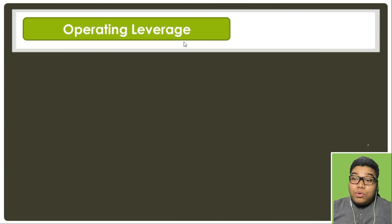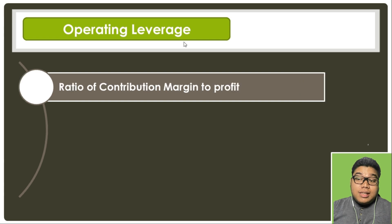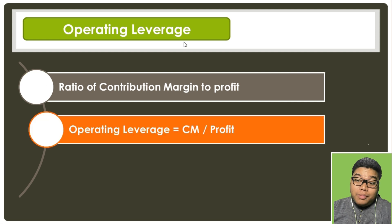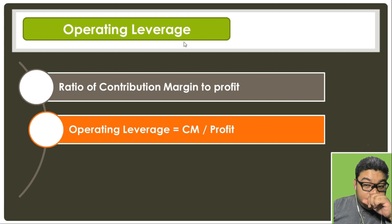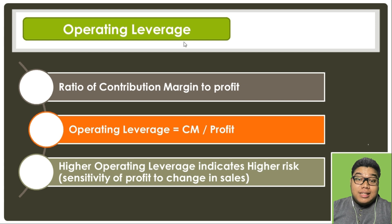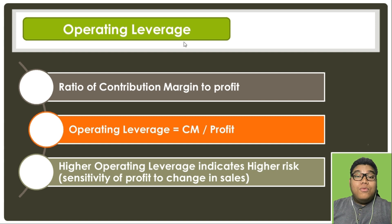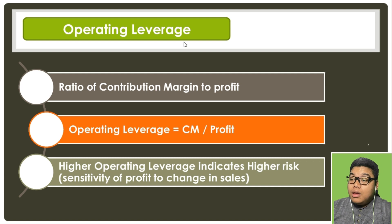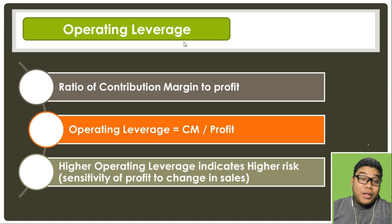Now we move to operating leverage. Operating leverage is the ratio of contribution margin to profit — that is, CM divided by profit. The higher the operating leverage, the higher the risk, meaning your net income is more sensitive to changes in sales volume. The closer you are to break-even, the higher your operating leverage should be.